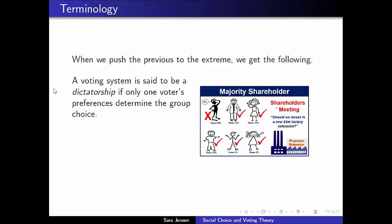In the previous video, we discussed concepts of anonymity and neutrality in voting systems, but we also saw examples in real life where we do allow voting systems to lack anonymity and lack neutrality. What I'd like to talk about in this video is what happens when we push those concepts to the extreme. If we take the concept of anonymity and push it to the extreme, what happens is we have a voting system that we call a dictatorship.